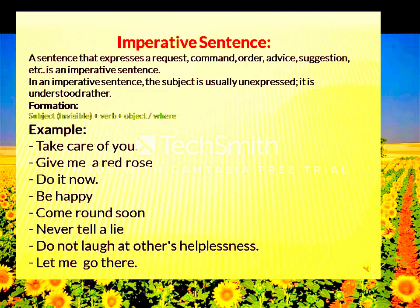An imperative sentence expresses a request, command, order, advice, or suggestion. In an imperative sentence, the subject is usually unexpressed — it is understood. Examples: 'Take care of your health.' 'Open the door.' 'Close the door.' 'Come around soon.' 'Never tell a lie.' 'Don't run.'